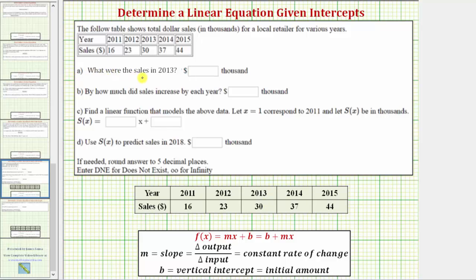First question is what were the sales in the year 2013? So looking at this column here, notice how the table shows 30, which means the sales were $30,000. But because the dollar sign is already here, as well as units of thousands, we only enter 30.